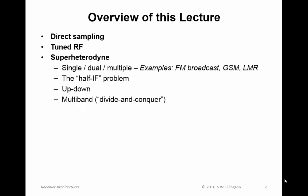Other examples of receiver architectures include super heterodyne receivers, with several variants: single, dual, and multiple conversion. We'll talk about how these are used in FM broadcast, GSM, and land mobile radio receivers. We'll talk about the half-IF problem, and the up-down superHET architecture, which is commonly used in spectrum analyzers and general coverage HF receivers. And then multiband, also known as divide-and-conquer superHET architecture.